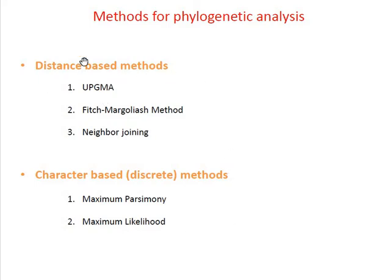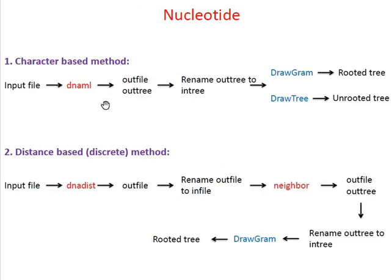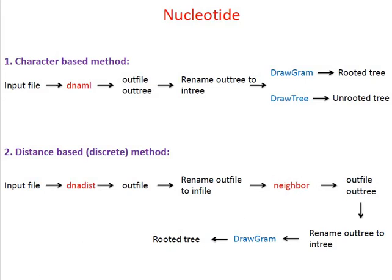Here is the flow diagram for phylogenetic analysis when dealing with nucleotide sequences. Under the character-based method you have the DNA ML program, and under the distance-based method you have the DNA Dist program. DNA Dist is joined with another program known as Neighbor, which is for the Neighbor Joining method. It is important that you understand the workflow.